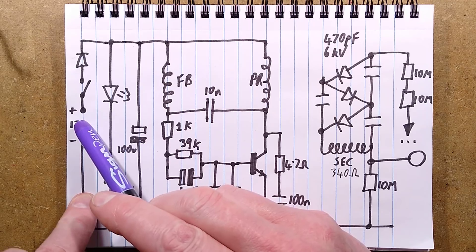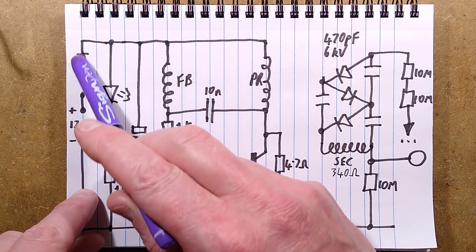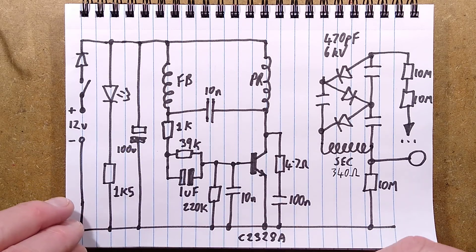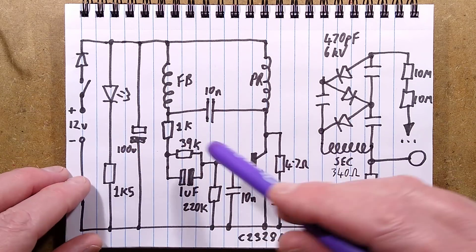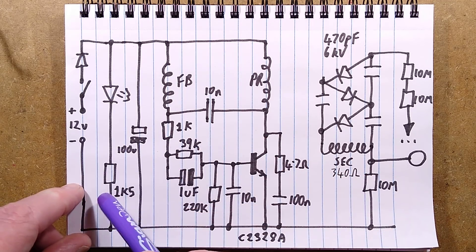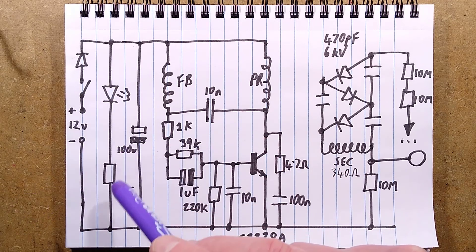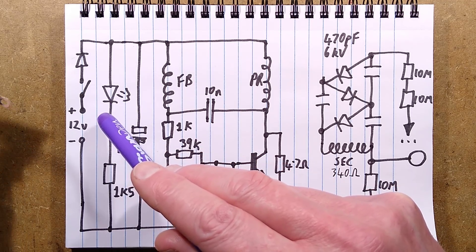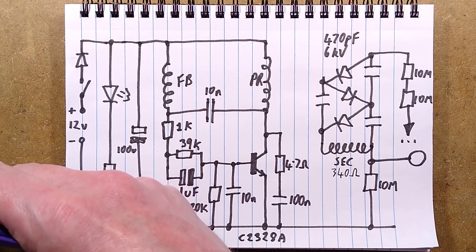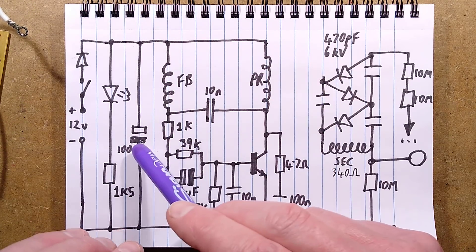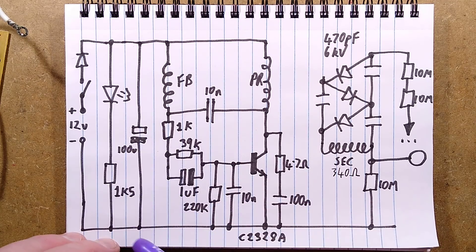We start with the 12V supply. There's a switch and there's a polarity protection diode. This is nice. I wish more would put polarity protection diodes in. It's very common for well-designed stuff. Then there's an LED and a resistor - 1,500 ohm resistor is 1k5. And the LED, I believe it's a gallium phosphide. Just a standard traditional green reliable. There's a 100 microfarad smoothing capacitor.